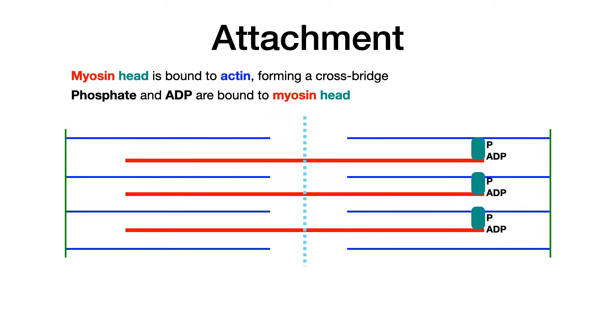So we start with attachment. And I've tried to color code everything here to make this easier for you to learn and memorize. So in attachment, the myosin head, again myosin is our thick red filament, and the head is shown in that dark teal color. The myosin head is attaching to actin. And I'm just going to use actin instead of actin to really hammer home my mnemonic. So myosin head is bound to actin and it forms what's known as a crossbridge. So at this point, the myosin and actin are in a crossbridge, they're attached, they're ready to pull. And before that pull happens, which is known as the power stroke, which is the second phase of this physiology, phosphate and ADP are bound to the myosin head. So phosphate and ADP are basically going to provide the energy source for the power stroke.